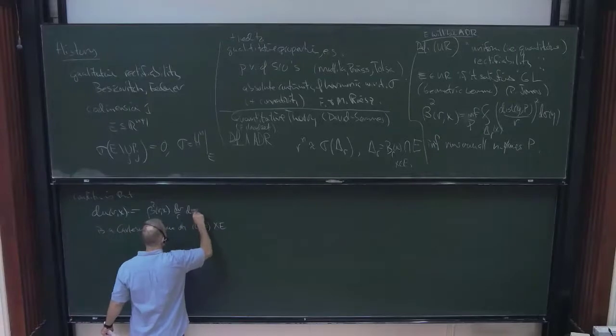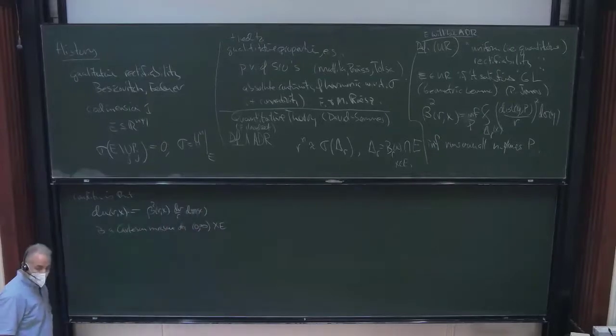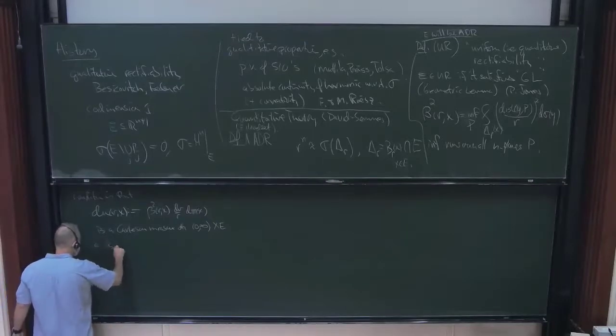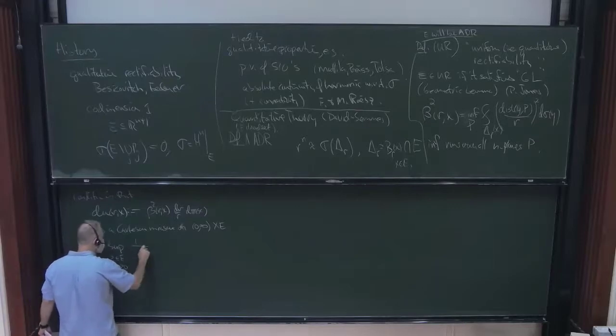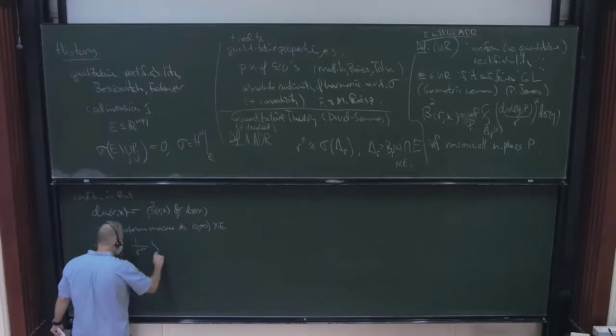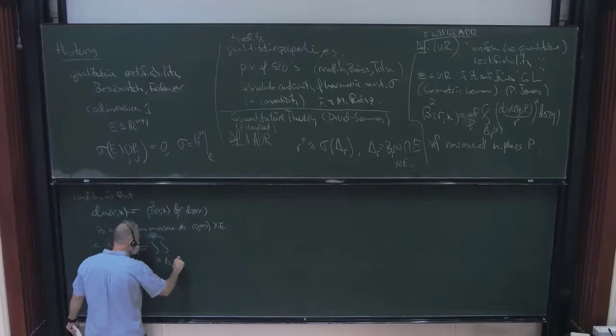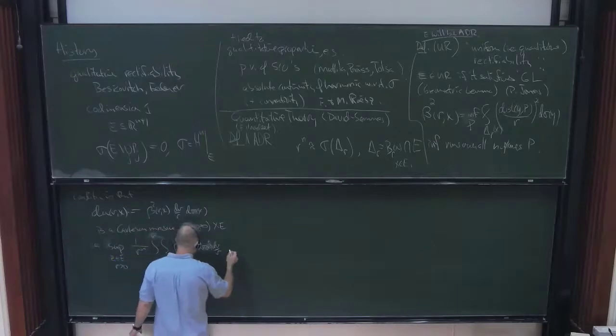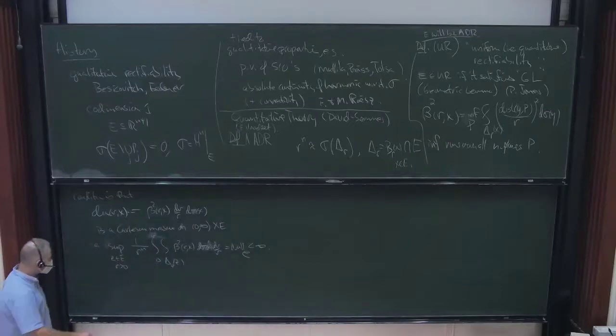On zero infinity cross E, E endowed with a sigma measure. And when I write the X, I should write these sigma X. So meaning that the sup overall, let's say Z and E, and all R bigger than zero, of one over R to the n integral zero to zero to R, integral over delta R of Z, beta squared of R X d X d R over R d sigma of X d R over R is, which we'll call the Carleson norm of mu, is finite.